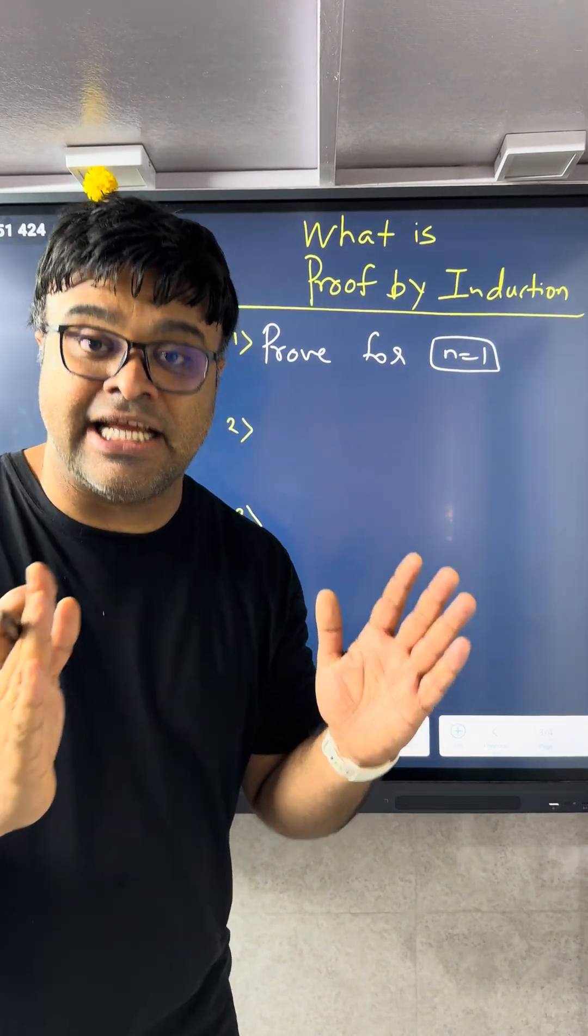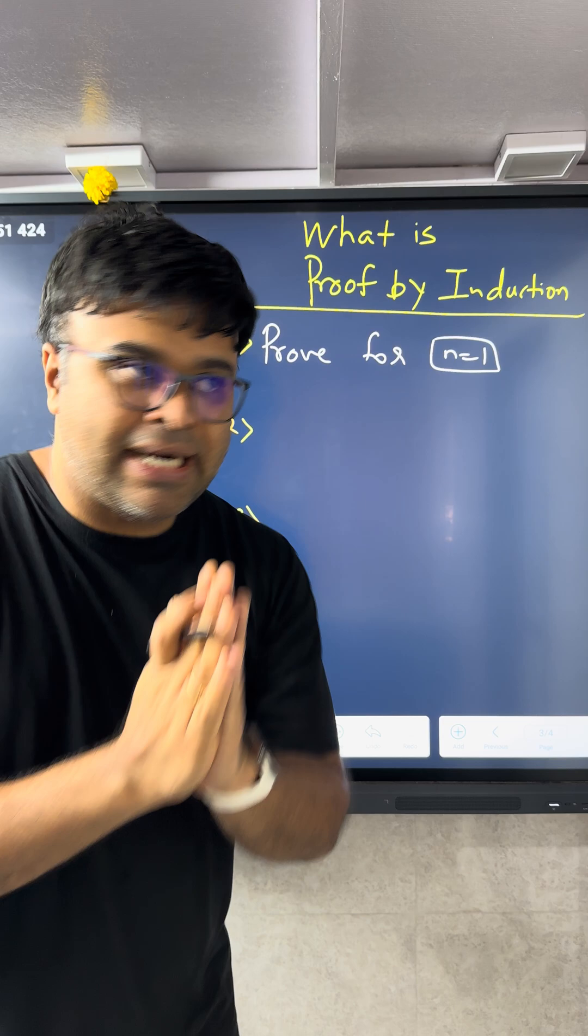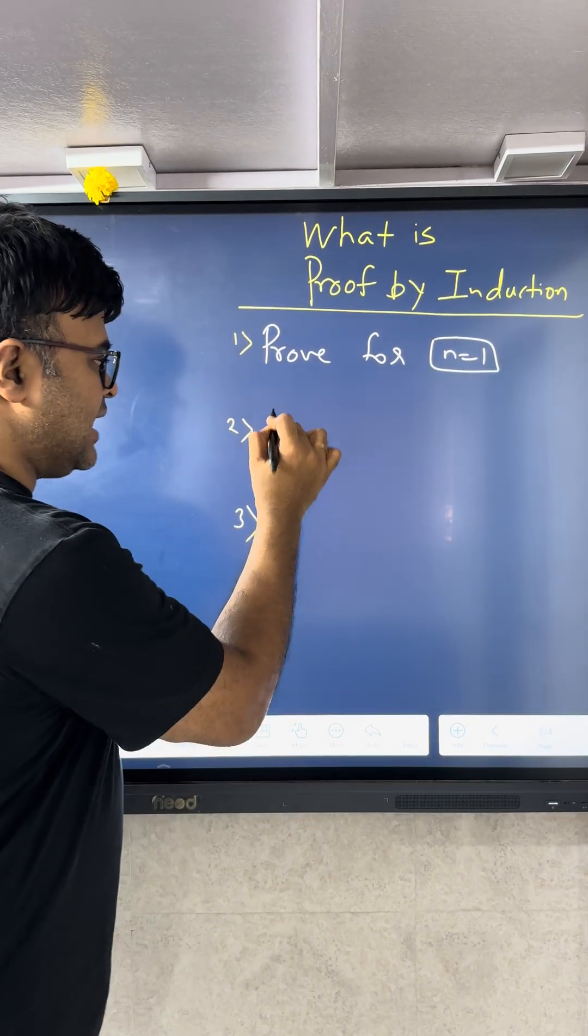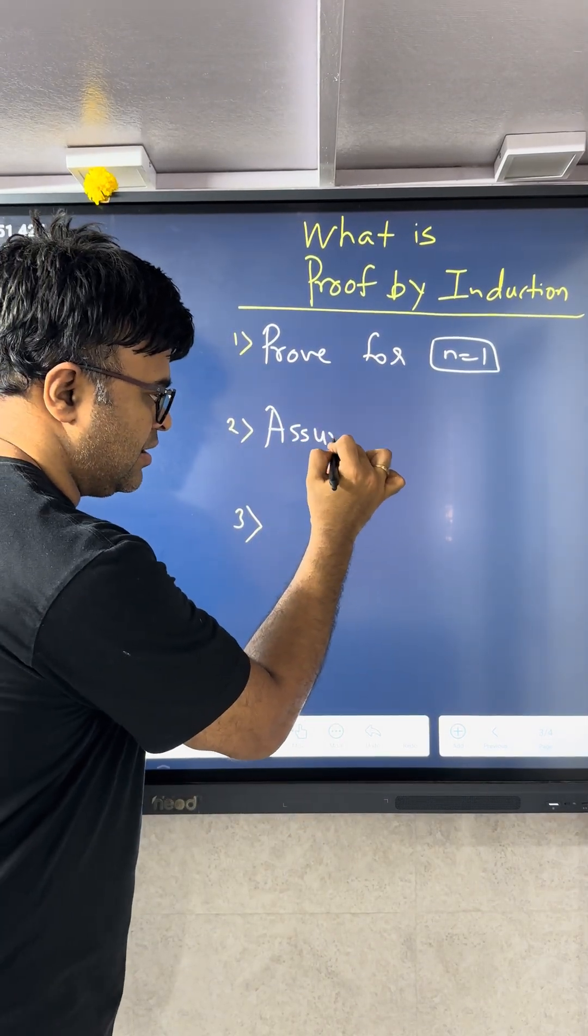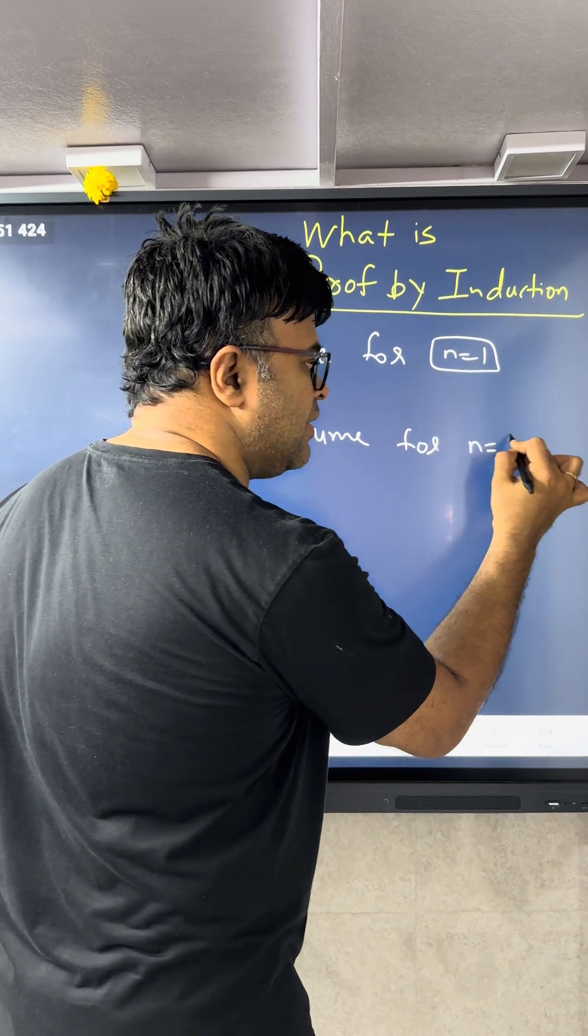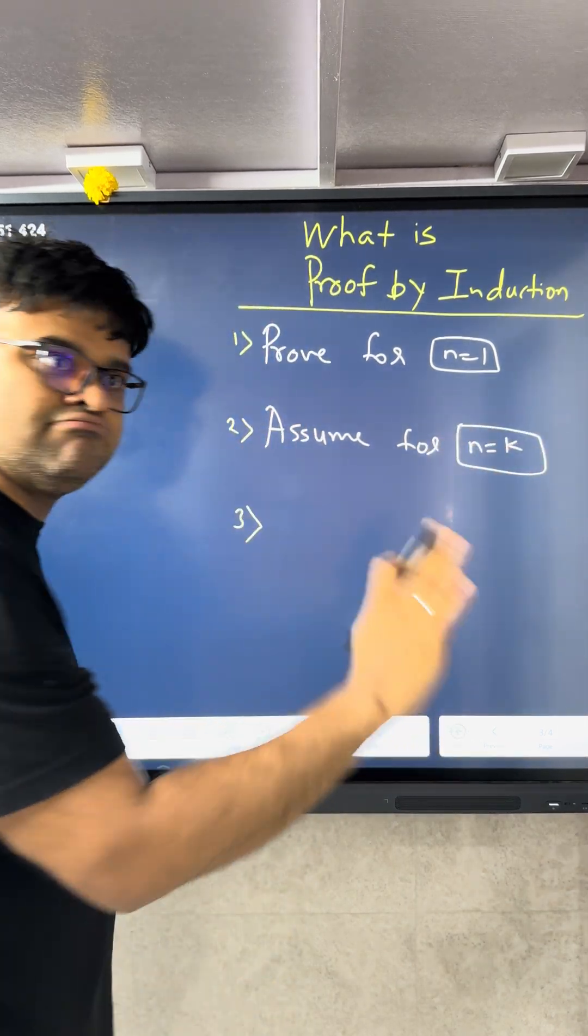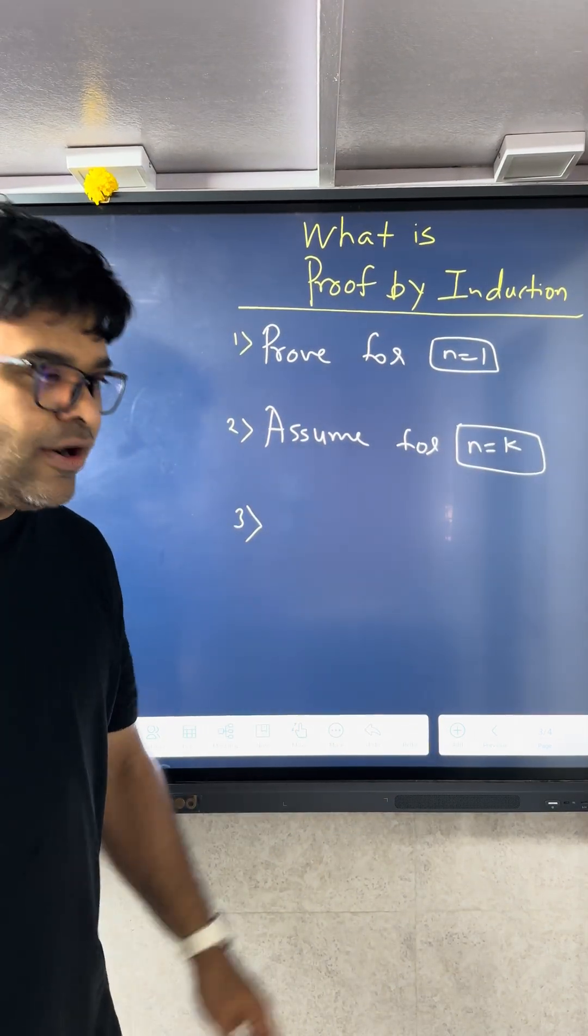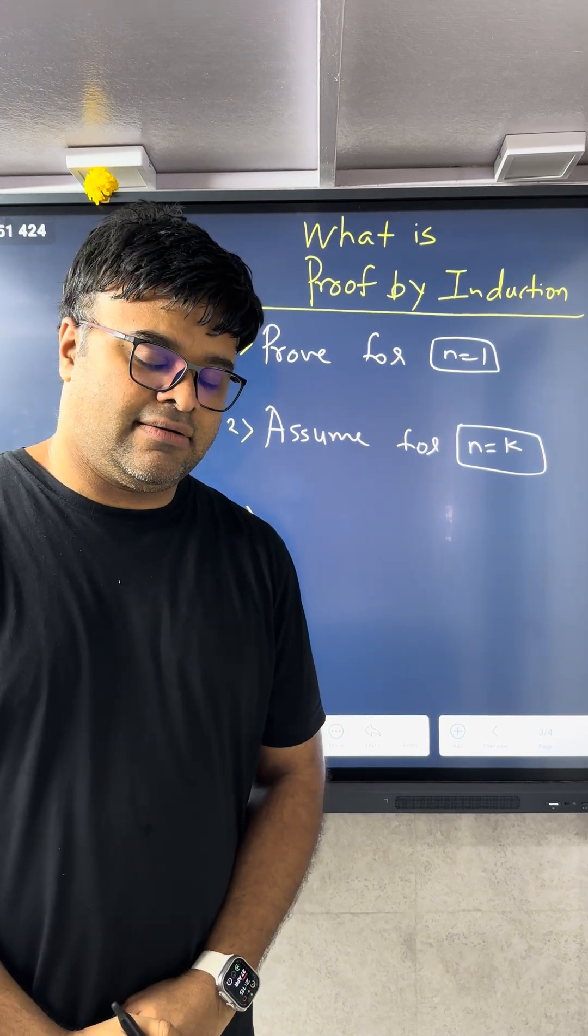But in the second step, no proving. It is assume for n equal to k. No proving here. We're gonna say, well it works for n equal to k. We are not doubting this.